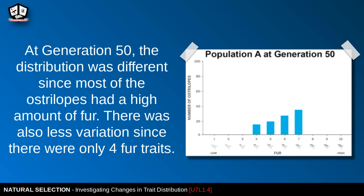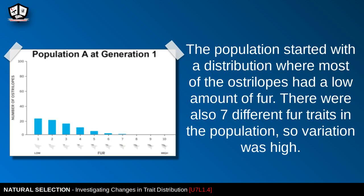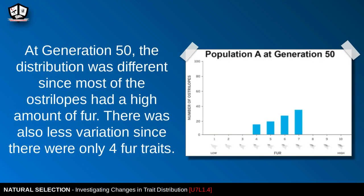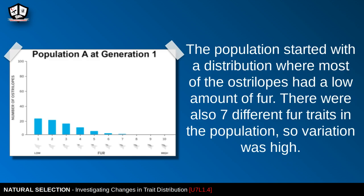At generation 50, the distribution was different since most of the ostrilopes had a high amount of fur — you can see level seven is the highest, a very different look than generation one. Additionally, there was less variation since there were only four fur traits: four, five, six, and seven. So variation is lower than what we see in generation one.